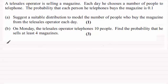Okay, welcome back then if you had a go. Now the first part here, part A, suggests a suitable distribution to model the number of people who buy the magazine from the telesales operator each day. Well, it's got to be a binomial distribution. And you might want to put down the parameters for this. I'm going to say that our random variable, let's say X, is distributed binomially.